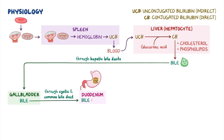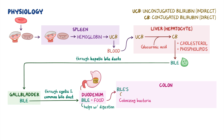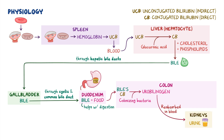The bile then mixes with the food to help digestion while traveling along the intestines. Upon reaching the colon, the colonizing bacteria convert bile's conjugated bilirubin into urobilinogen. Most of that urobilinogen gets reabsorbed into the blood and travels to the kidneys, where it gets excreted into the urine, giving it its distinct yellow color. The urobilinogen that remains in the colon gets further converted by colonizing bacteria to stercobilinogen, which is excreted into the feces, giving a distinct brown color.